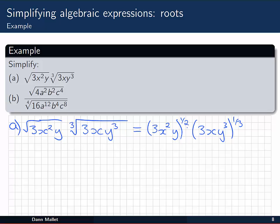Now I can use the index laws to bring the 1/2 power inside these brackets, and the 1/3 power inside these. I have 3 to the 1/2, x to the 2 times 1/2, or 1, and y to the 1/2. Then in the next part, 3 to the 1/3, x to the 1/3, and y to the 3 times 1/3, or just 1.